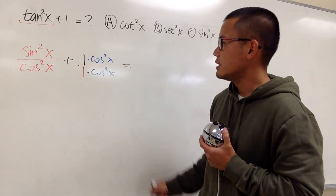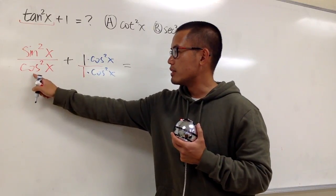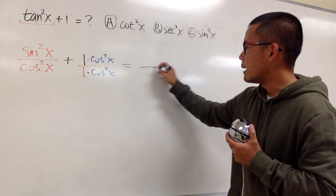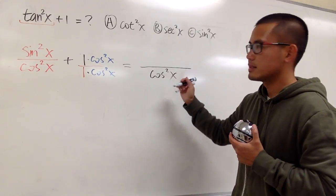As we can see, we are adding fractions, and now the denominators are the same. When we combine the fractions, the denominator will stay the same, cos²x, okay?